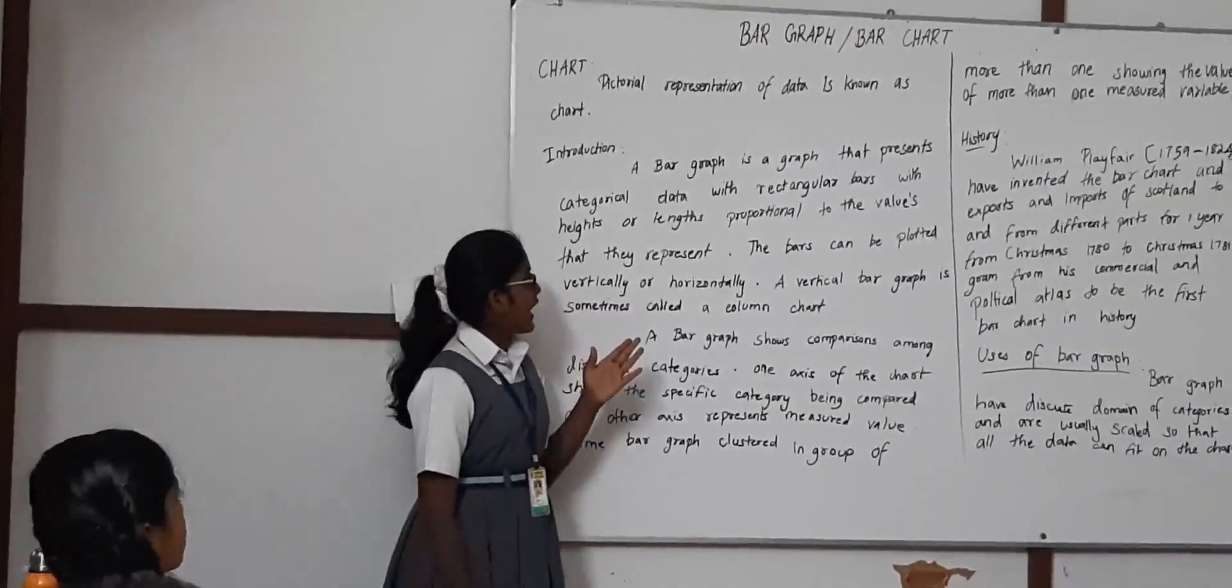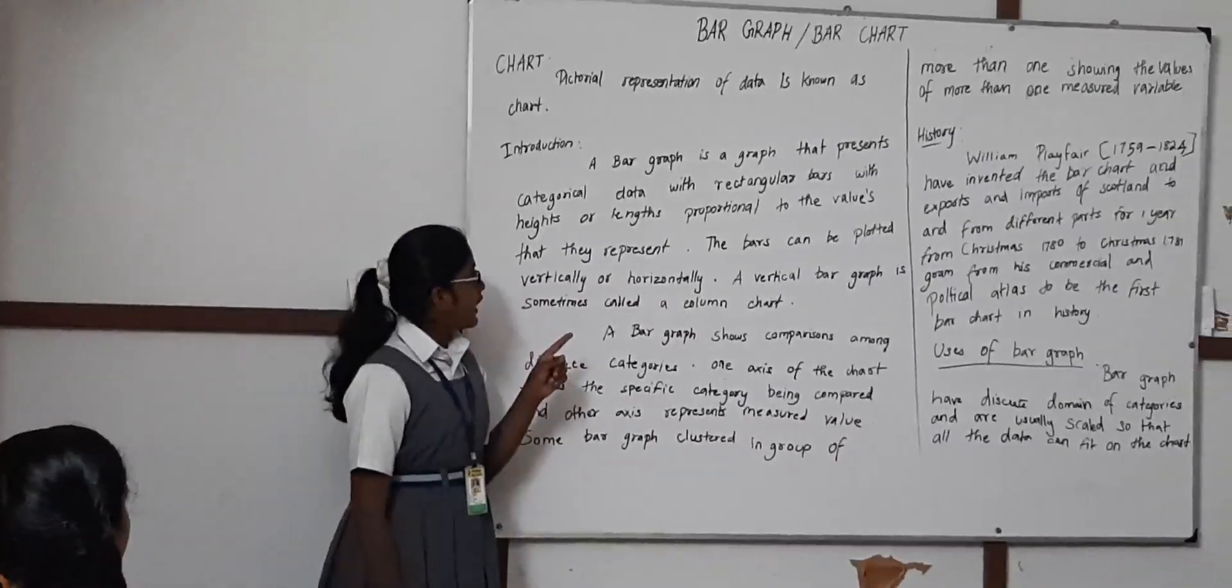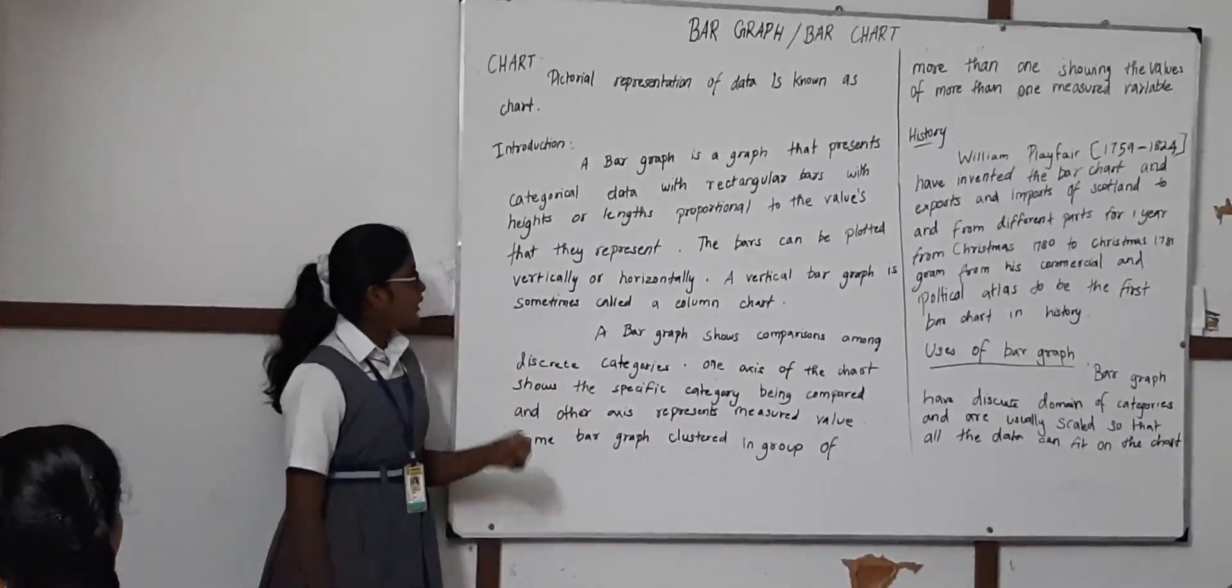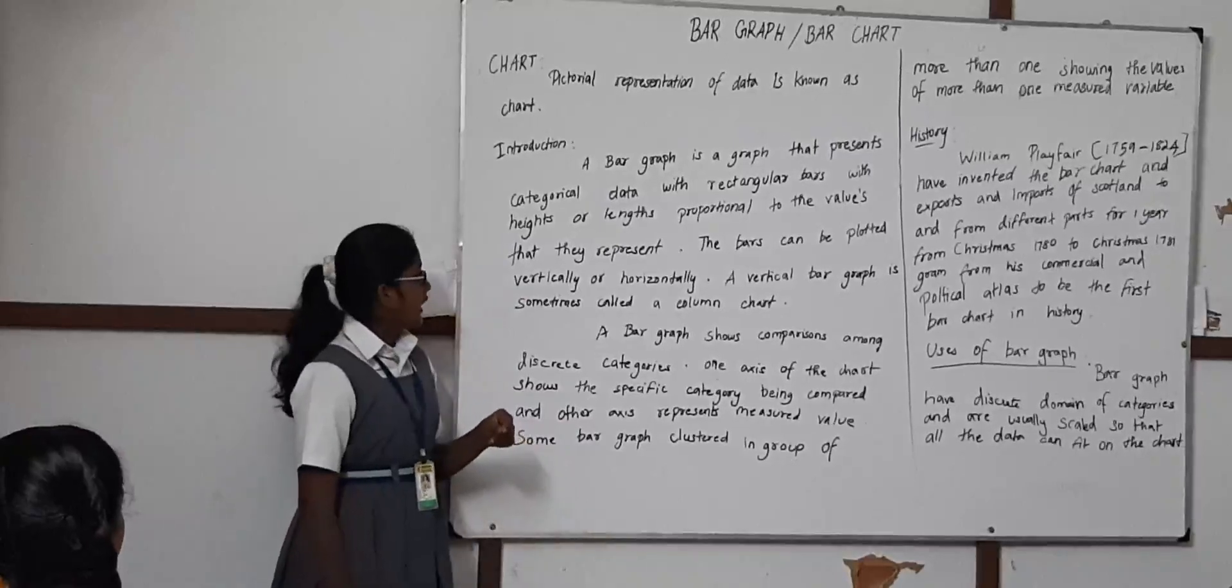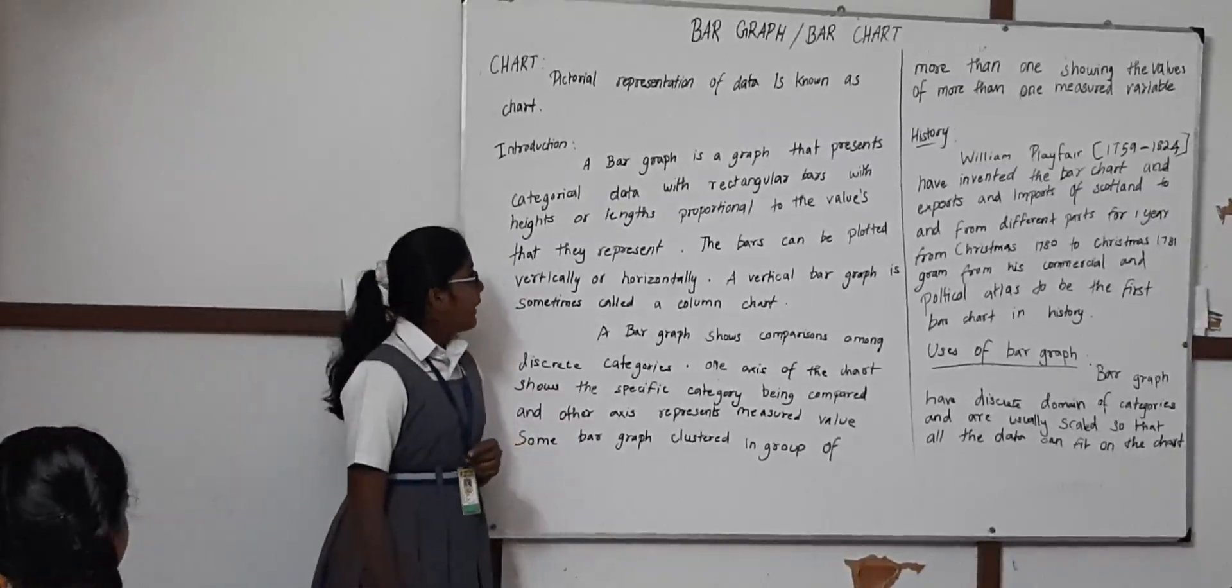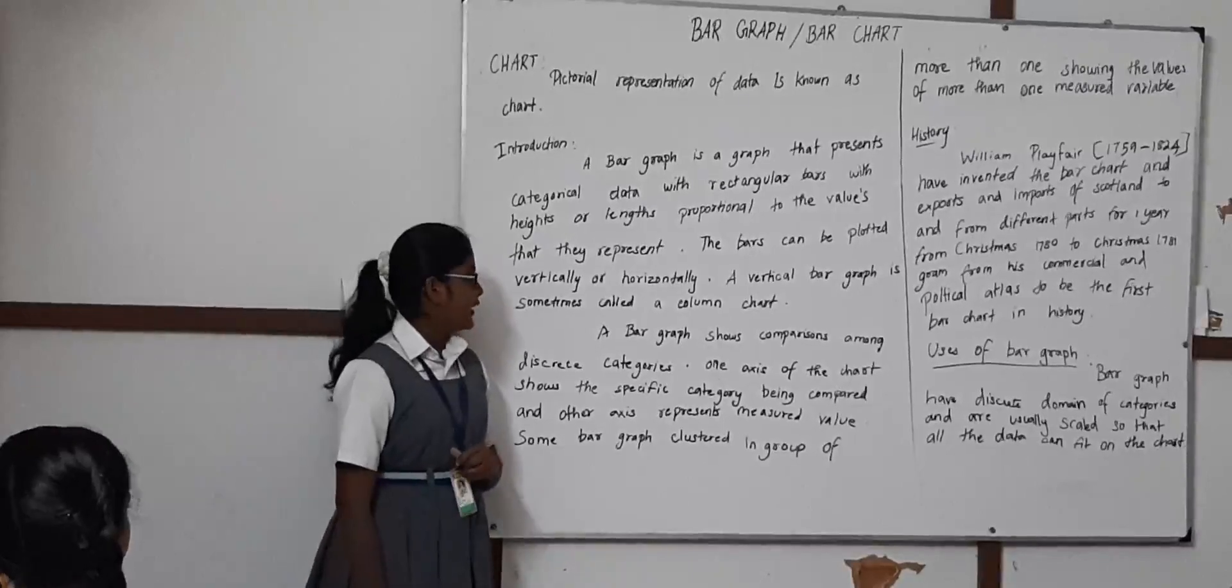A bar graph is a graph that represents categorical data with rectangular bars, with heights or lengths proportional to the values that they represent. The bars can be plotted either vertically or horizontally.